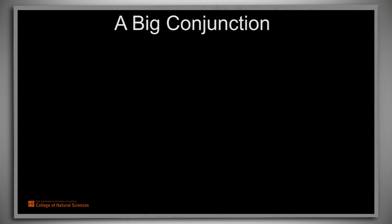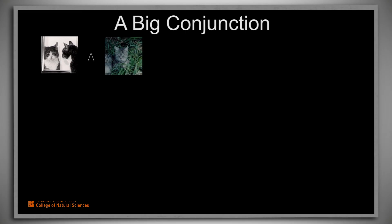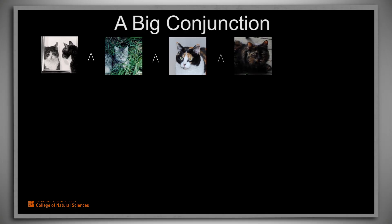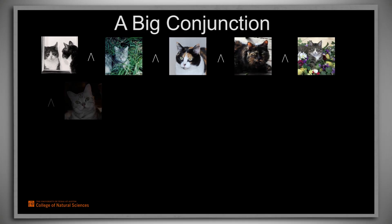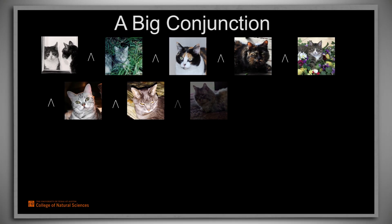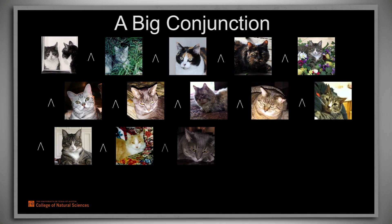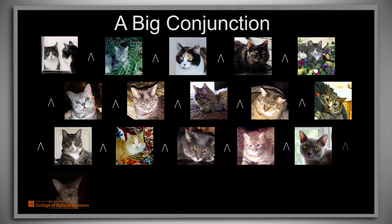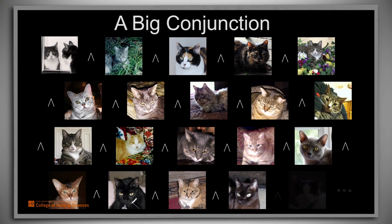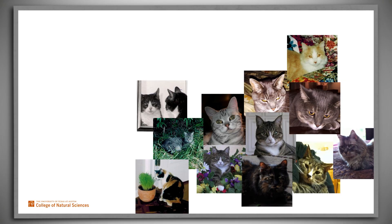Now consider another claim: Miss Pris is a mammal, and Jerry is a mammal, and Lucy is a mammal, and so is Agnes, and Gretel, and Bertie, and Tommy, and Katie, and Lily, and Mickey, and Hansel, and Choco, and Lola, and Gabe, and Dizzy, and Getz, and Hardy, and so forth. We could make the claim that all of the world's cats are mammals by writing a very long conjunction such as this. This claim is true only in case all of the conjuncts are true.